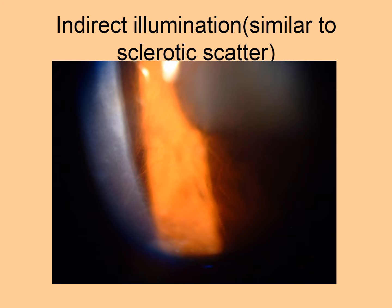Another type of illumination is indirect illumination. In indirect illumination, the object of interest is not directly illuminated; instead, an opacity next to it is illuminated, and this opacity transmits some of the light into the transparent cornea, allowing us to see the object of interest which might otherwise be faint or blanked out by a bright direct light. Here we see vessels in the cornea with indirect illumination — the partially opaque cornea next to the vessels is illuminated and the vessels are highlighted.